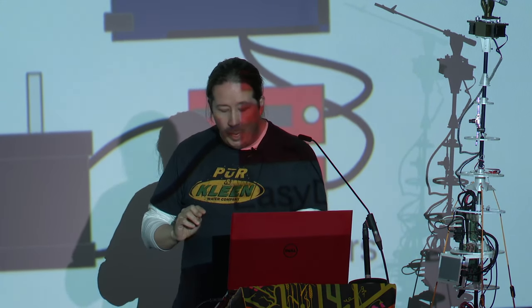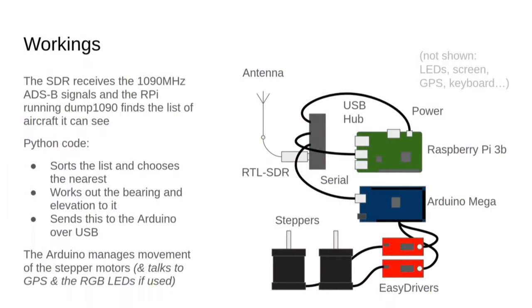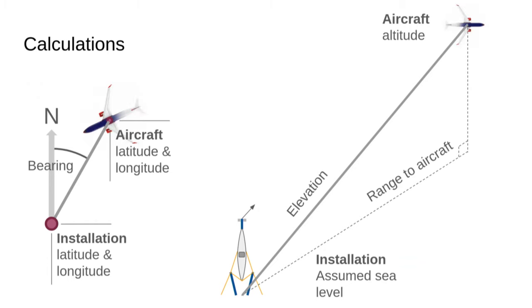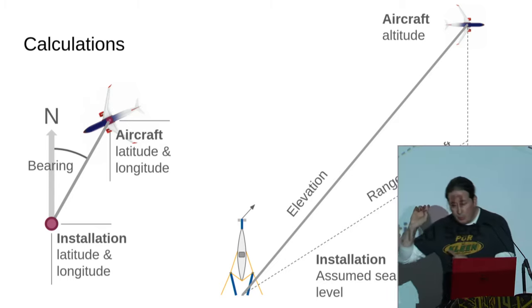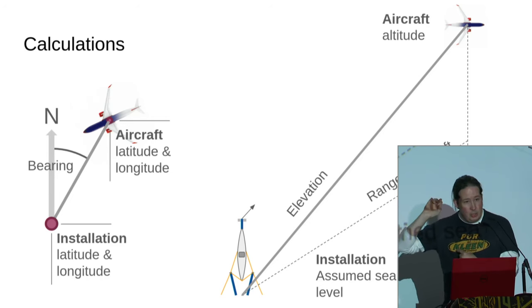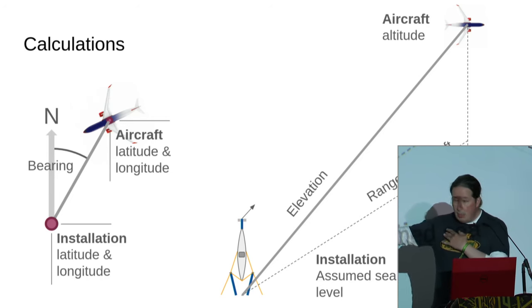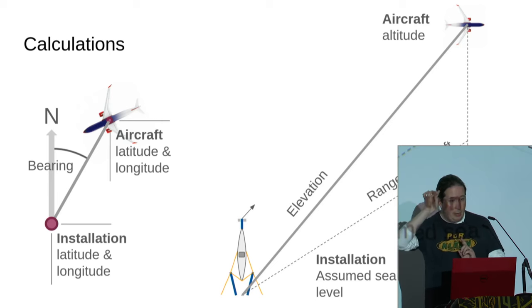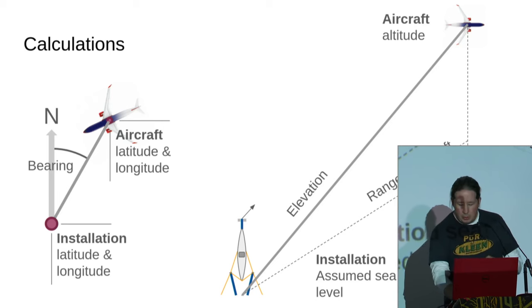There are a few other things not shown here because they're not connected at the moment. Effectively, everything is pulled together and it's actually quite modular, which I discovered is quite useful. What it's doing is receiving where the aircraft is — its latitude and longitude. It knows its own latitude and longitude, so it can work out a bearing to the aircraft, a distance, and in 3D it can work out the elevation from the aircraft's altitude. Those two things together mean you can point directly at the aircraft.